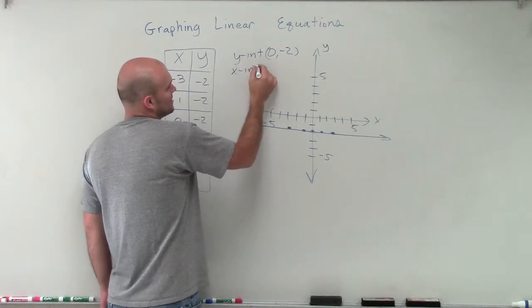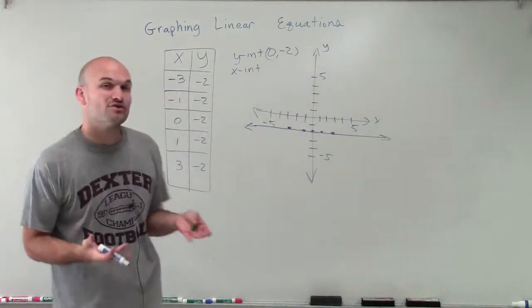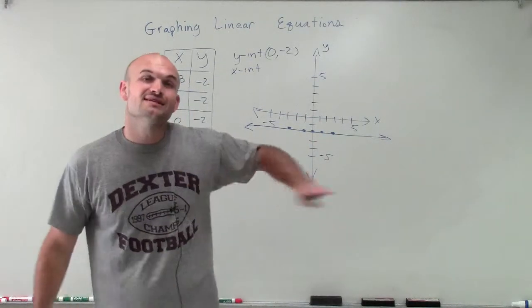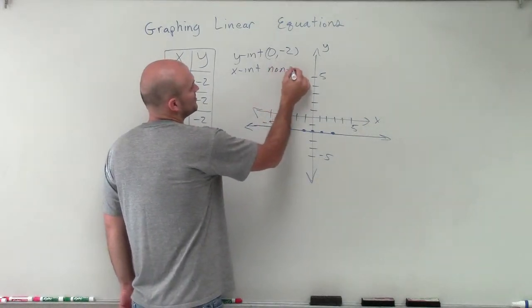But then when we look at the x-intercept, we see does this graph cross the x-axis at all? And no, it does not. And it's never going to, because the pattern is just going to continue at a solid line. So the x-intercept does not exist. Or I'm just going to simply write none.